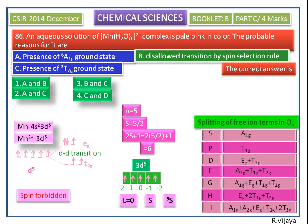For d5 configuration, we get S term. For the S term, the irreducible representation is A1g. So we write A1g instead of S. So the correct ground state term is 6A1g.